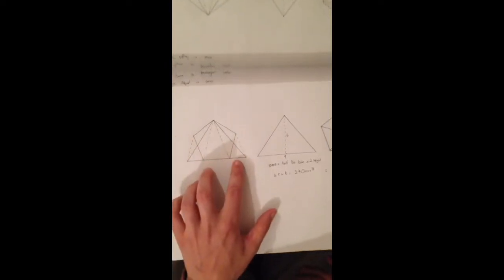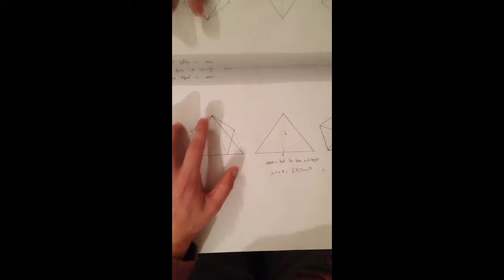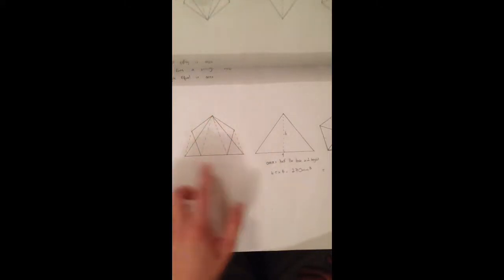Then we connect those two corner points to the apex of our pentagon and that gives us our triangular shape as shown here.